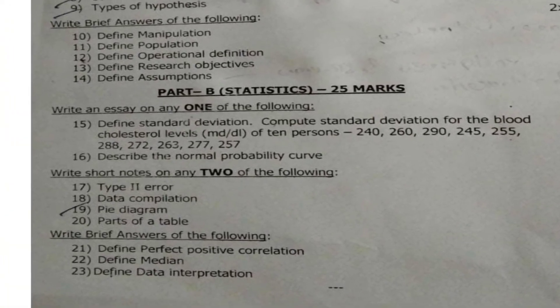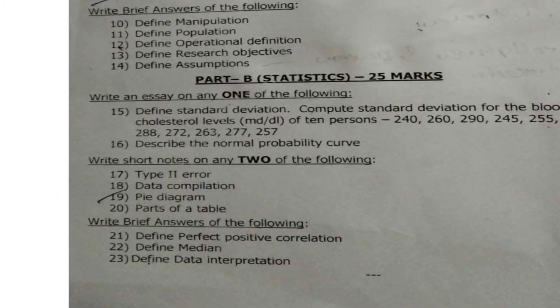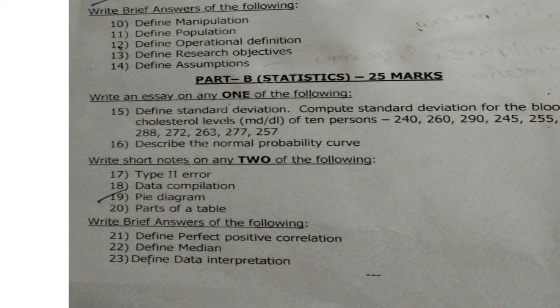For short notes in Part B, answer any two out of four questions — two into five equals ten marks. The questions are: seventeenth, type two error; eighteenth, data compilation; nineteenth, pie diagram; twentieth, parts of a table.